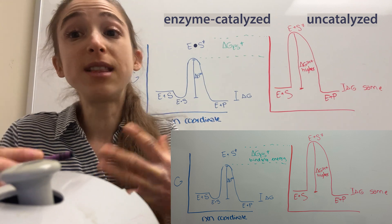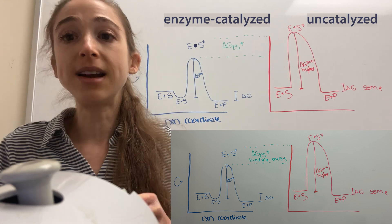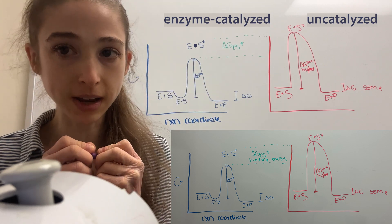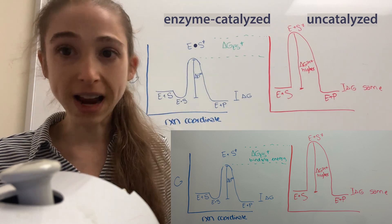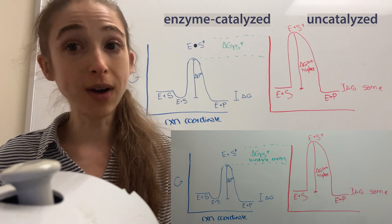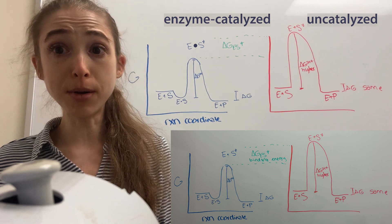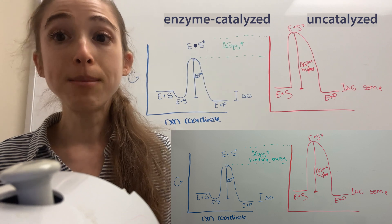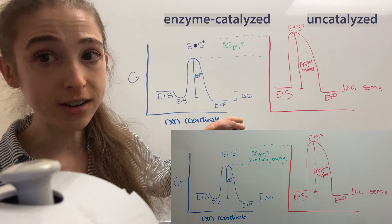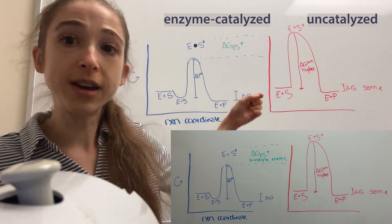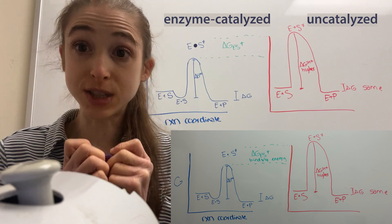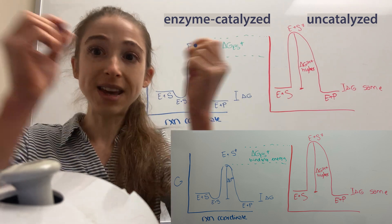The way the enzyme is able to help is by forming favorable interactions with the crayon as it's being broken — with your substrate as it's being turned into product. When you form favorable interactions, remember the enthalpy component in Gibbs free energy? Basically, we make favorable interactions, we lower our free energy. If we lower the free energy of that really uncomfortable point — the point at which it's breaking — that's going to make it easier to happen.